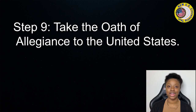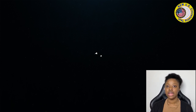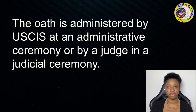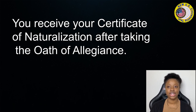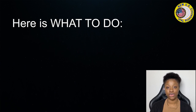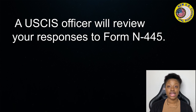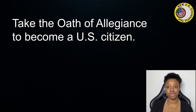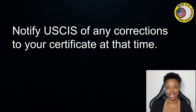Step 9: Take the oath of allegiance to the United States. You are not a U.S. citizen until you take the oath of allegiance at a naturalization ceremony. The oath is administered by USCIS at an administrative ceremony or by a judge in a judicial ceremony. A court has exclusive authority to conduct the ceremonies in certain USCIS districts. You receive your Certificate of Naturalization after taking the oath of allegiance. Here is what to do: complete the questionnaire Form N-445, check in with USCIS for your oath ceremony, a USCIS officer will review your responses to Form N-445, turn in your green card, take the oath of allegiance to become a U.S. citizen, and receive your Certificate of Naturalization. Be sure to review it before leaving the ceremony site and notify USCIS of any corrections at that time.